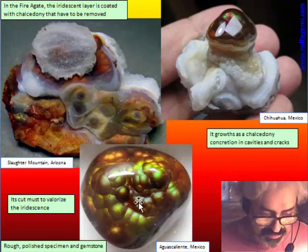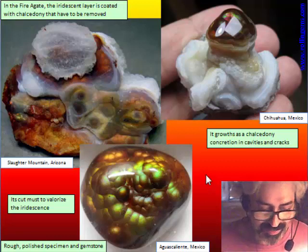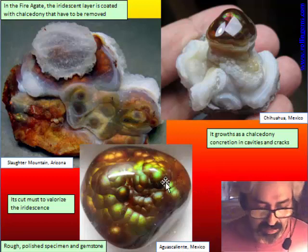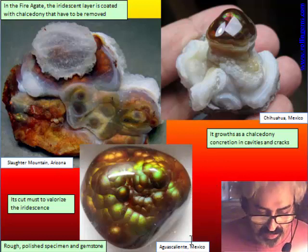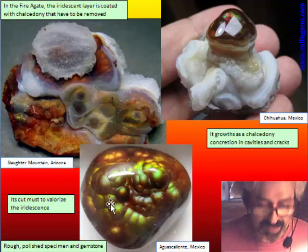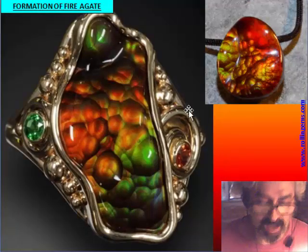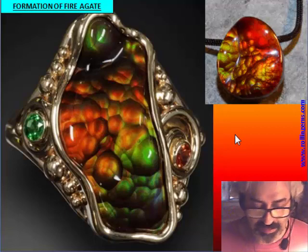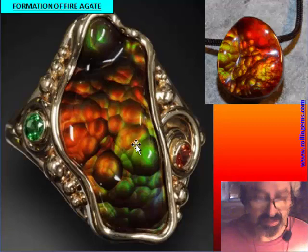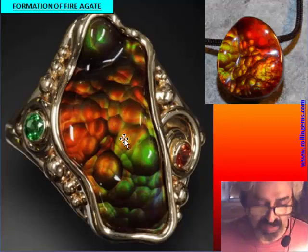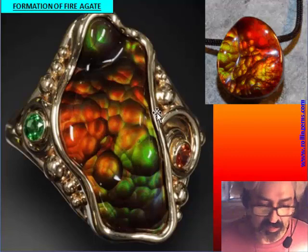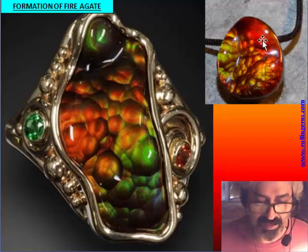These are the cut stones. Usually the cut must valorize the iridescence, so it has to cut around the shape of the botryoidal surface. It is a must to make a free form with free shape and free upper surface, so it is a kind of undulated gemstone, more similar to a boulder opal. Also the very high quality is comparable with opals because of its iridescence, and it is more stable than opals, so it is possible to use in jewelry, in rings — these kinds of stones are forever.